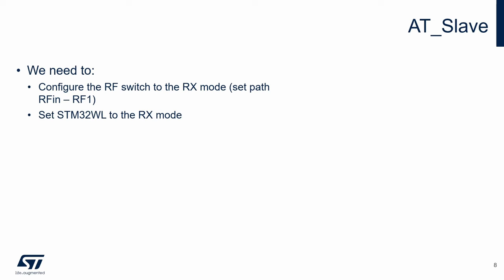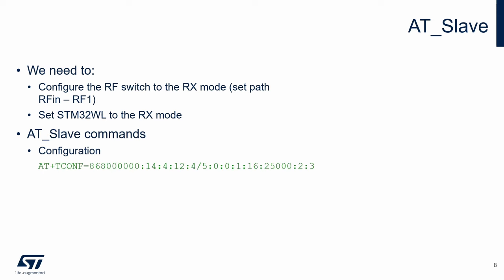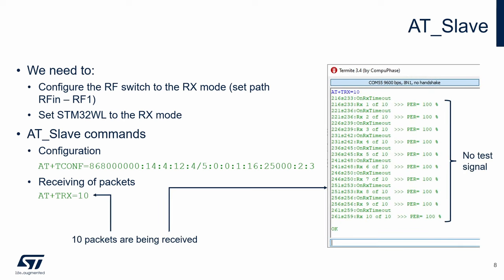The AT-slave can also be used for testing of the receiver. During the measurement, we need to set the RF switch to receiver mode and set the STM32WL to receiver mode as well. Here are the commands which can be used. For configuration, we can use the same command as we use for the transmitter. For sensitivity measurements, we need to set parameters of the modulated signal. If we only want to turn on the receiver, no special setting is needed — we can use default values. The AT-TRX command switches the STM32WL into receiving mode. The parameter is the number of packets which will be received, and this parameter is used for calculation of the packet error rate.